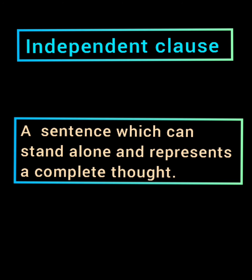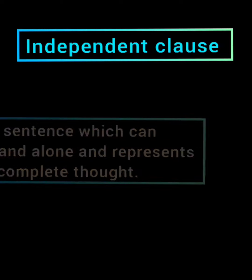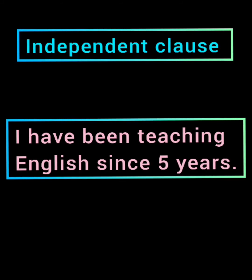So students, what is an independent clause? An independent clause or sentence is that sentence which stands alone and is complete in itself. It doesn't require any other kind of sentence to complete it. Mostly you will see these sentences have a subject, object, helping verb — whatever you want to convey, you can easily convey through the sentence. For example: 'I have been teaching English since 5 years.' My sentence is already complete. I do not need any other sentence to complete it.